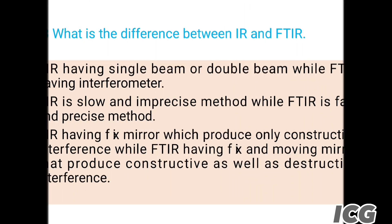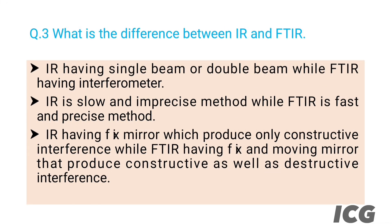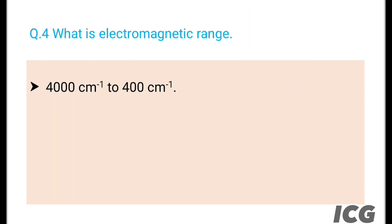The next question is: what is the difference between IR and FTIR? IR has a single beam or double beam, while FTIR has an interferometer. IR is a slow and imprecise method, while FTIR is a fast and precise method. IR has a fixed mirror that produces only constructive interference, while FTIR has both fixed and moving mirrors that produce constructive as well as destructive interference.